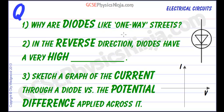So why are diodes like one-way streets? Well it's not a joke, however they only let current flow in one direction and that direction you can find out by looking at the arrow direction in the circuit symbol.